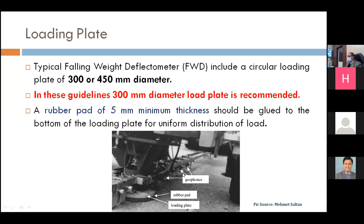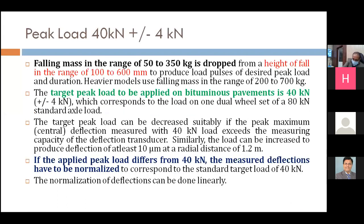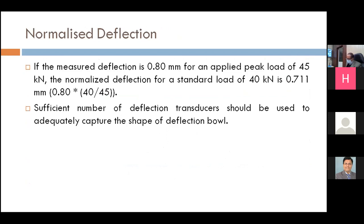The outer part of the deflection bowl gives some information about a certain layer's modulus; the area just below the loading plate gives different modulus information. We have to look at the deflection bowl parameters carefully. Weight drop from a predetermined height is important — on national highways we have to maintain 40 kN peak load. Good instrumentation and a skilled technician for the equipment are very important, to take care of geophones, load cells, and other arrangements.